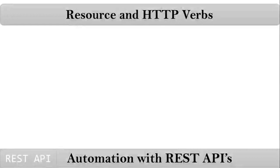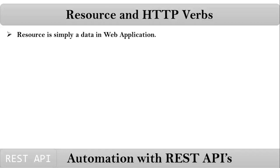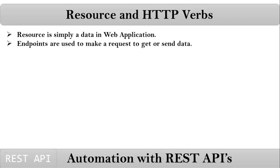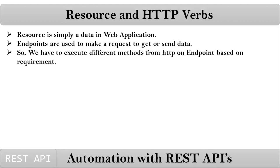Now let me go with Resource and HTTP verbs or methods or operations. Assume you are running a website to maintain your employee information. Either employee or employees information is called data. Resource is simply data in a web application — it may be one employee or multiple employees. Endpoints are used to make requests to get, create, or modify employee information.